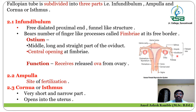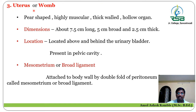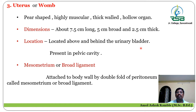The next major and most important part of the internal genitalia is the uterus, also called the womb. The uterus is a pear-shaped, highly muscular, thick-walled, and hollow organ. Its dimensions are about 7.5 cm long, 5 cm broad, and 2.5 cm in thickness. It is located above and behind the urinary bladder in the pelvic cavity. It is attached to the body wall by a double fold of peritoneum called the mesometrium or broad ligament.